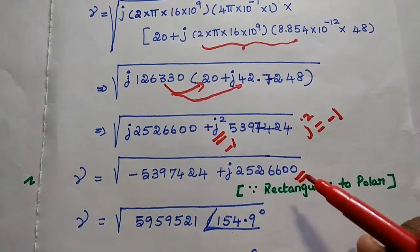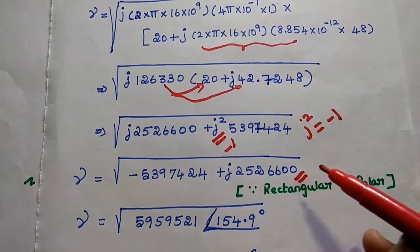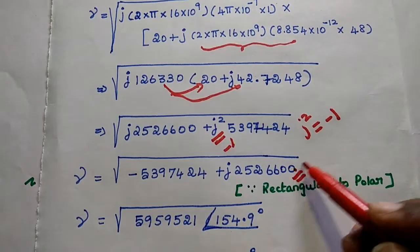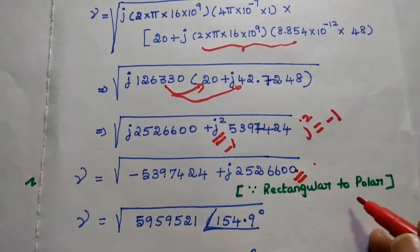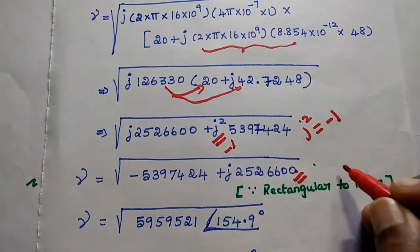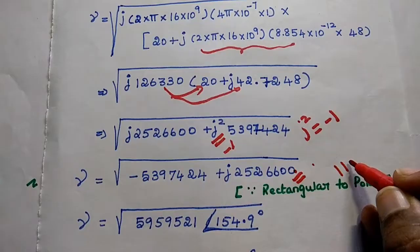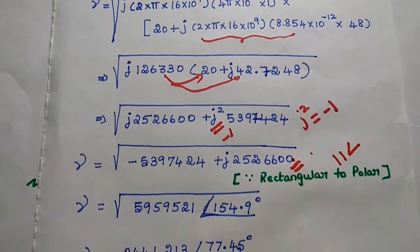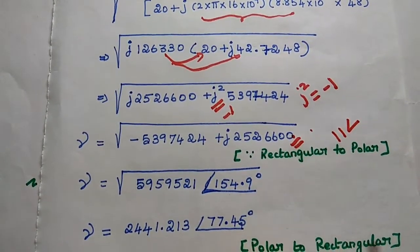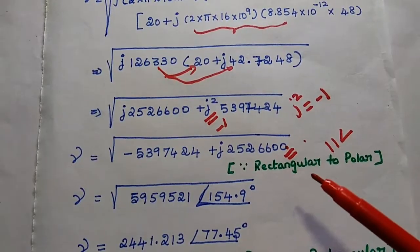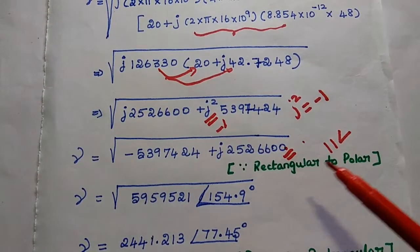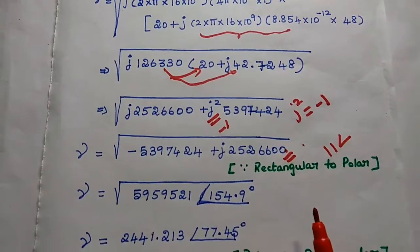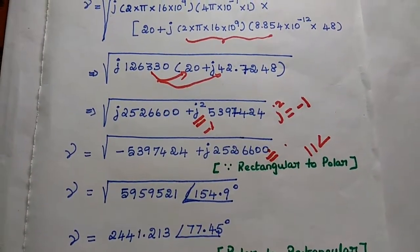To take the square root value, we can convert this rectangular form to polar form. Polar means the magnitude along with the phase. For that we can use the calculator. Let me show you how to convert rectangular to polar form.